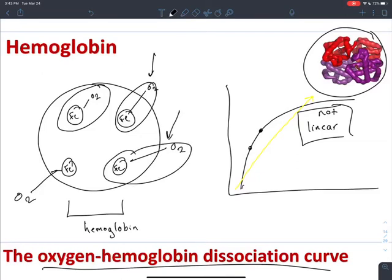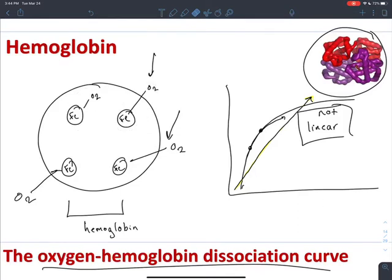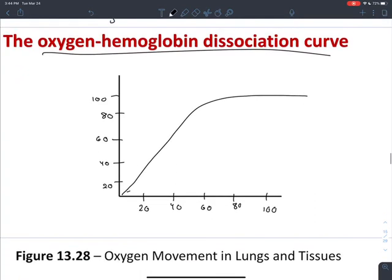So each time an oxygen binds, it helps oxygen bind to the next iron. So that means this oxygen right here helped this guy out, which made it easier, which helped this guy out. So if it was a linear curve, that wouldn't be displayed, that increase in affinity. We can see as we go up, the affinity is increasing. So that's the general idea of the cooperativity of the binding.